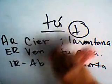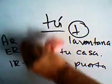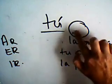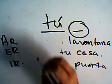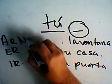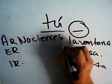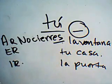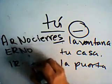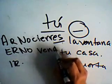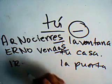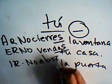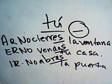What happens when tú commands become negative? Now we're back to the subjunctive. No cierres la ventana (present subjunctive). Don't sell your home: no vendas tu casa (present subjunctive). Don't open the door: no abras. So for negative tú commands, we're back to the present subjunctive forms.